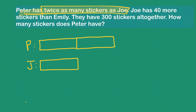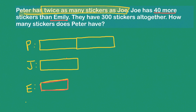So far so good. The next thing I'm told is that Joe has 40 more than Emily. So Emily's got the fewest stickers — Joe has more than her. That means Emily's block is going to be shorter, smaller. Maybe I'll make it red to show it's not the same size. We have something here that shows it's shorter.